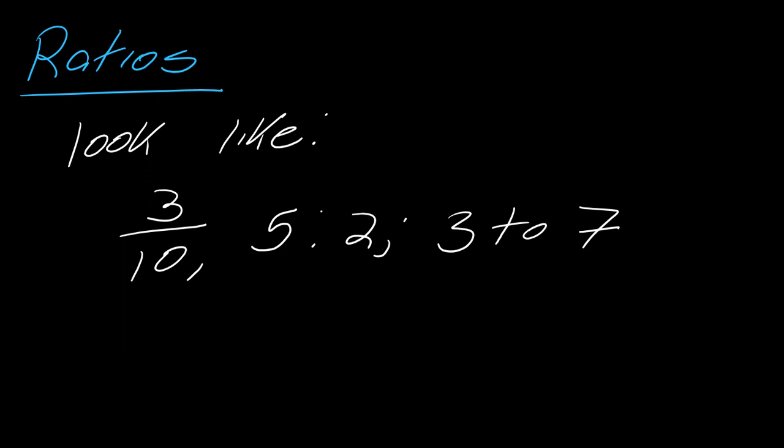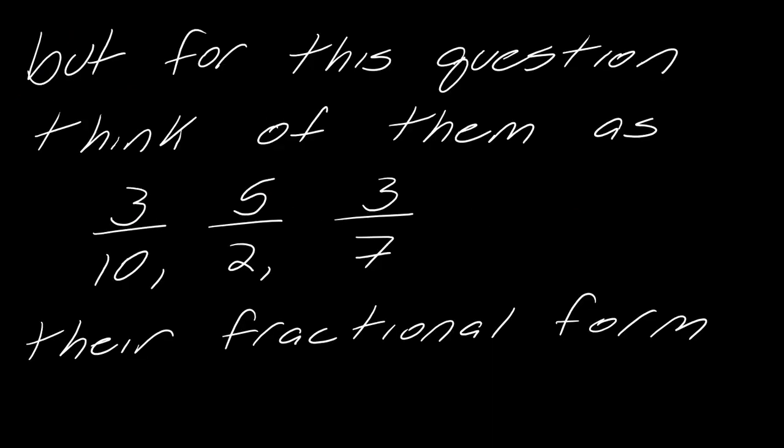So, little background for you. Ratios look like this - they could be a fraction. This would be read 3 to 10, or 5 to 2, or you could just spell out 3 to 7. This is an important thing to review. For this question, we want to think of ratios in terms of their fractional form: 3 tenths, 5 halves, 3 sevenths.